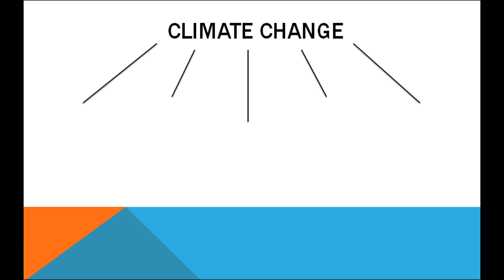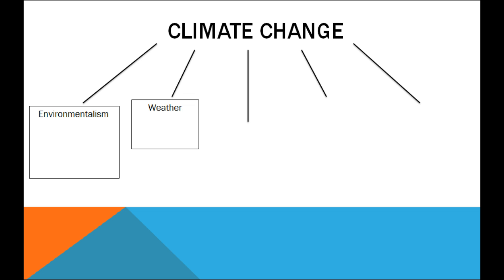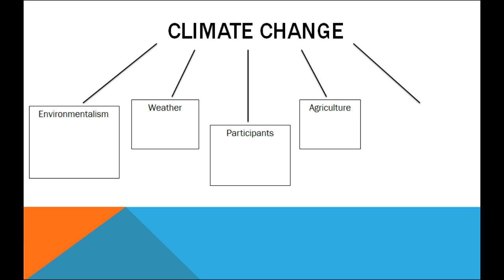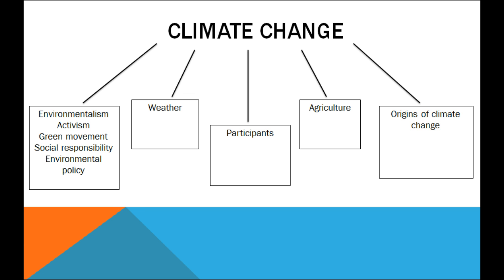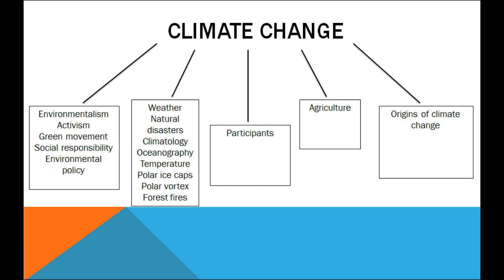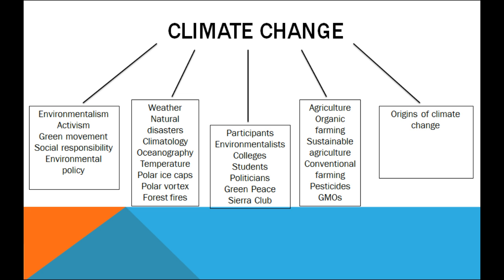What did you come up with? Some examples might be environmentalism, weather, participants, agriculture, or origins of climate change. Ask yourself what are other terms used to describe these key concepts. Brainstorm alternate words and phrases and add these to your concept map. Seeing these various options might help you narrow your focus or inspire a new direction for your research.